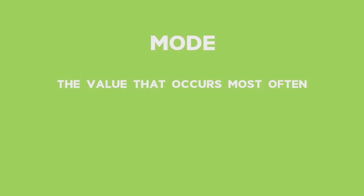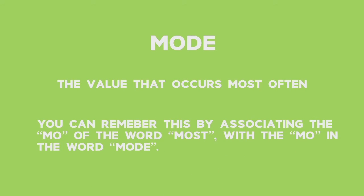The first is mode — the value that occurs most often. You can remember this by associating the MO of the word 'most' with the MO of the word 'mode'.